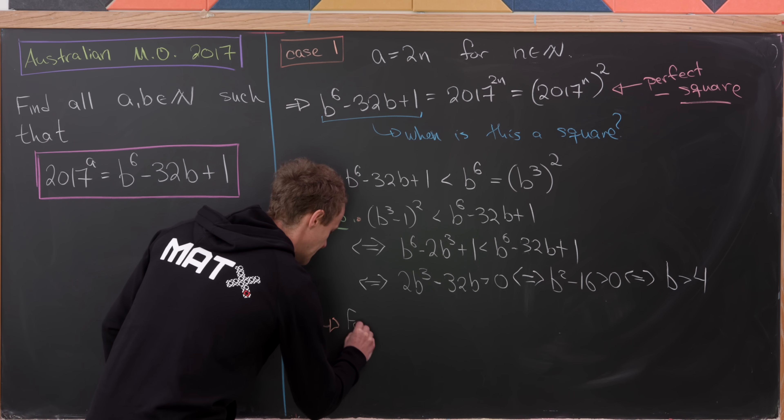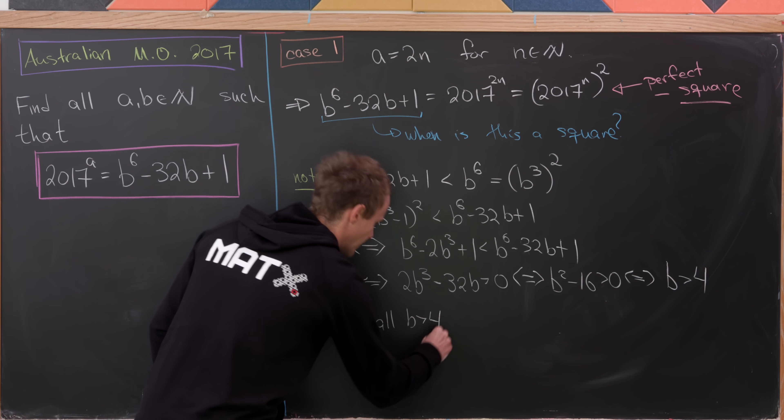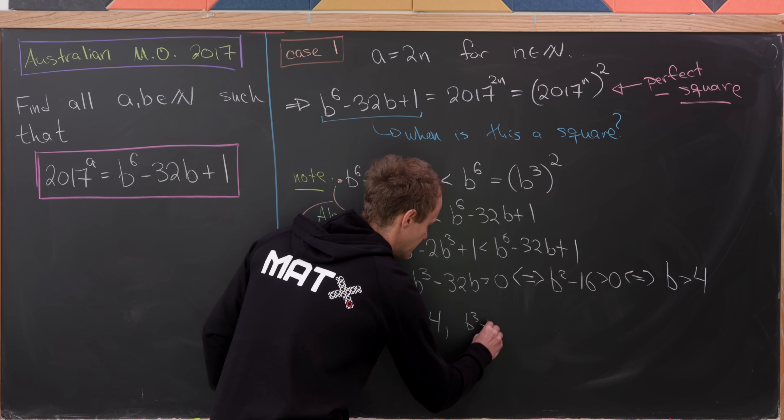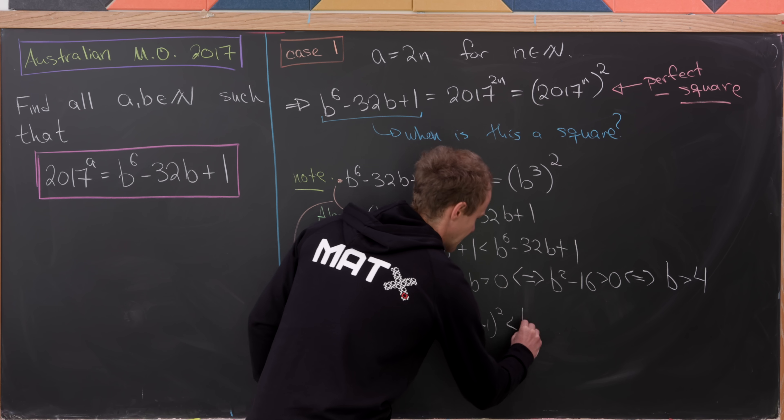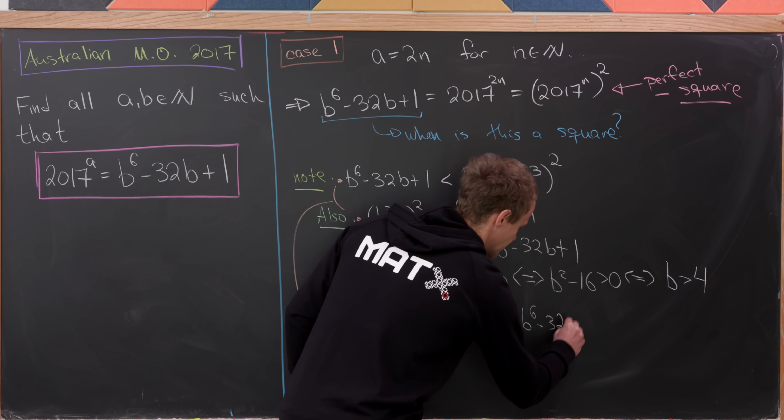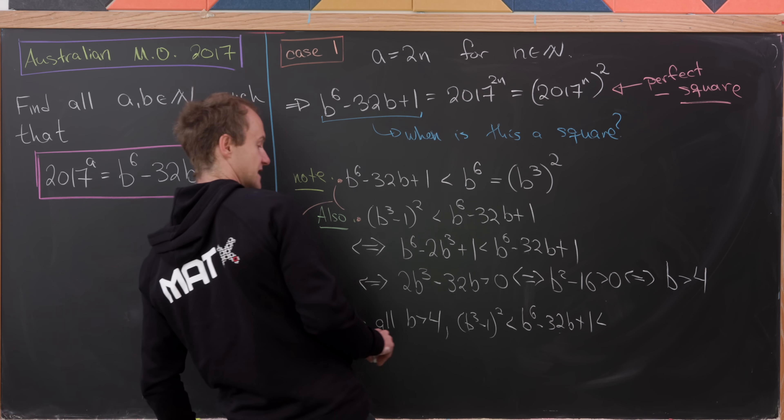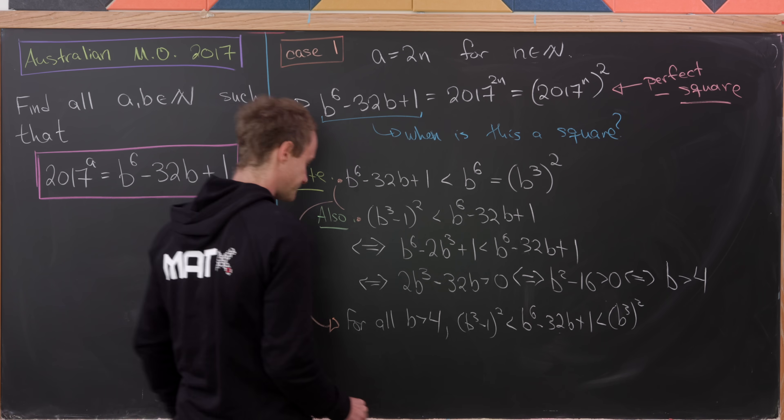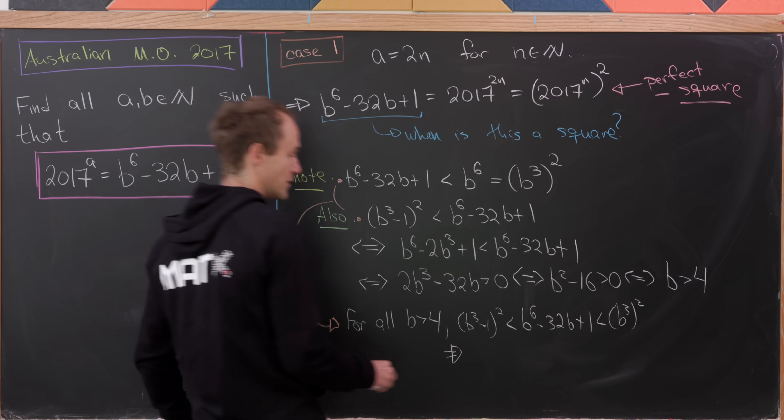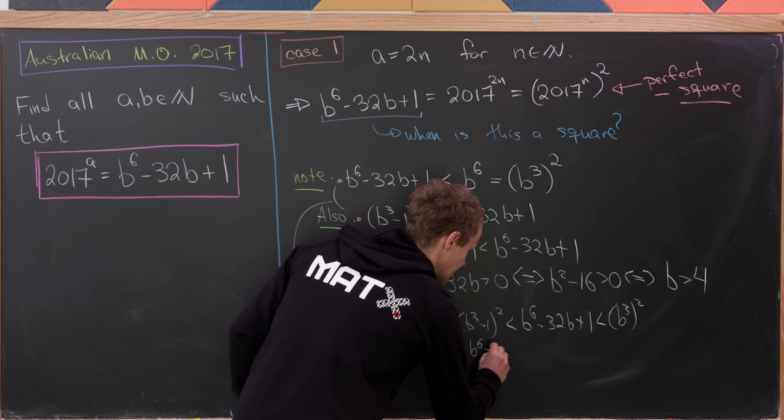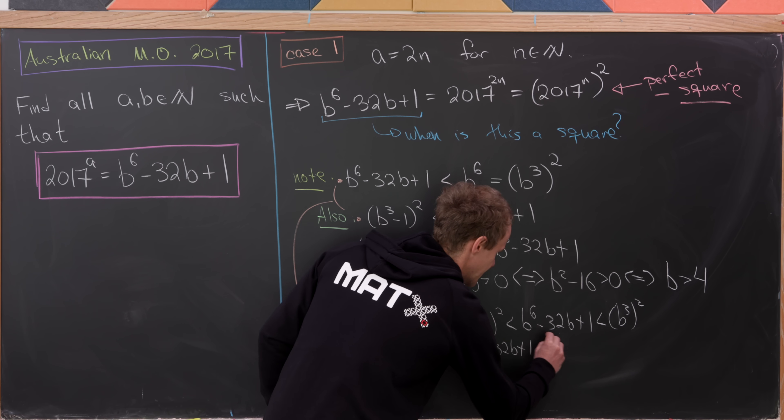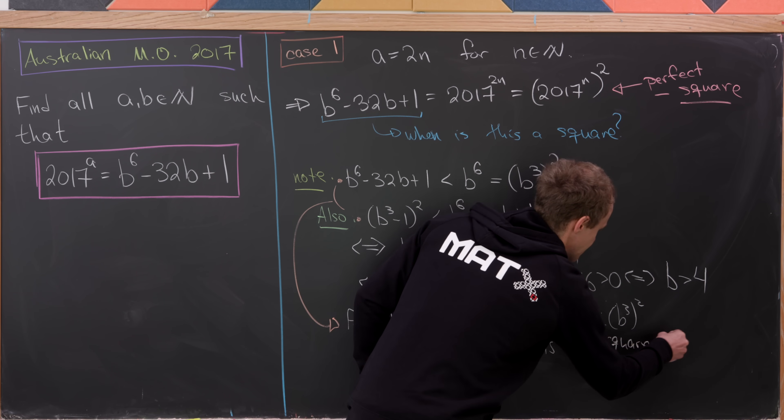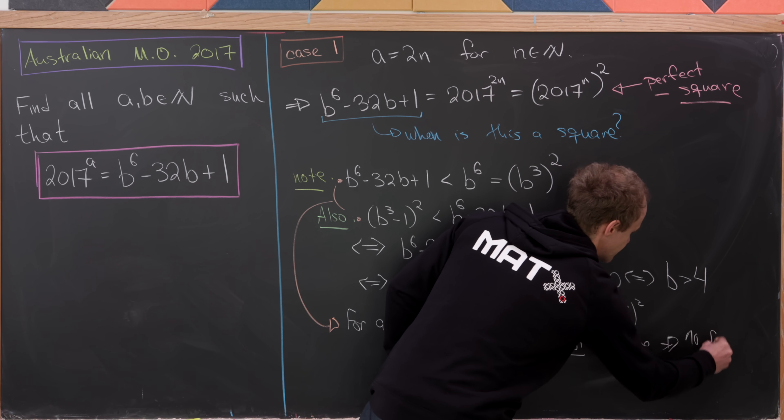And notice that now we have, for all B bigger than 4, we know that (B^3 - 1)^2 is less than B^6 minus 32B plus 1, which in turn is less than (B^3)^2. In other words, we know that our B^6 minus 32B plus 1 is not a square, which means there is no solution.